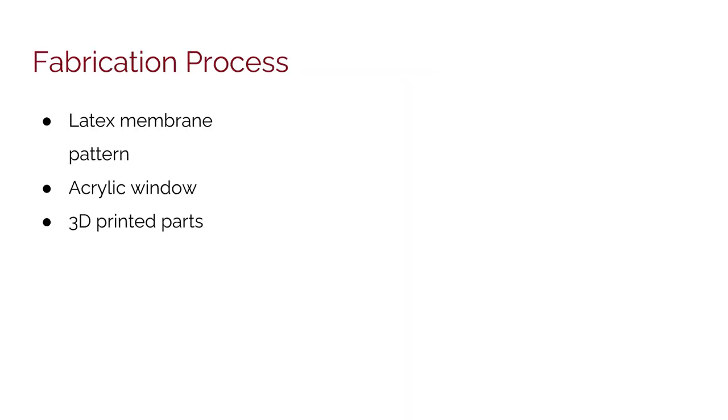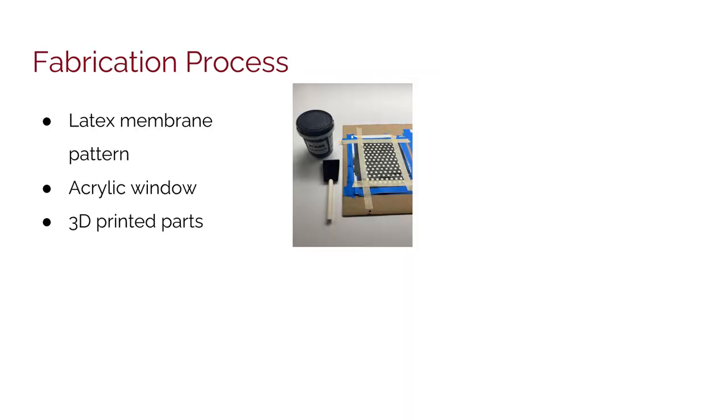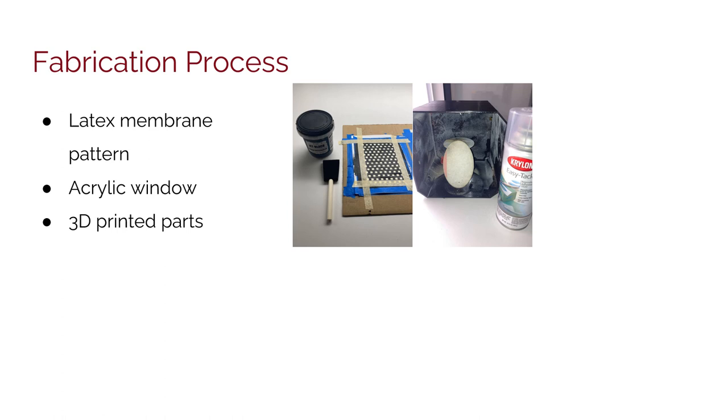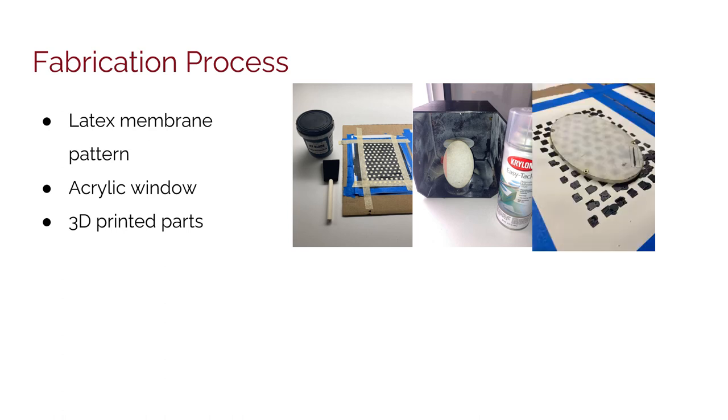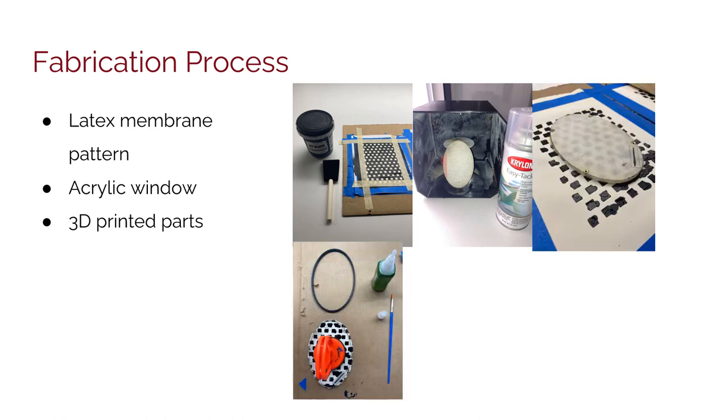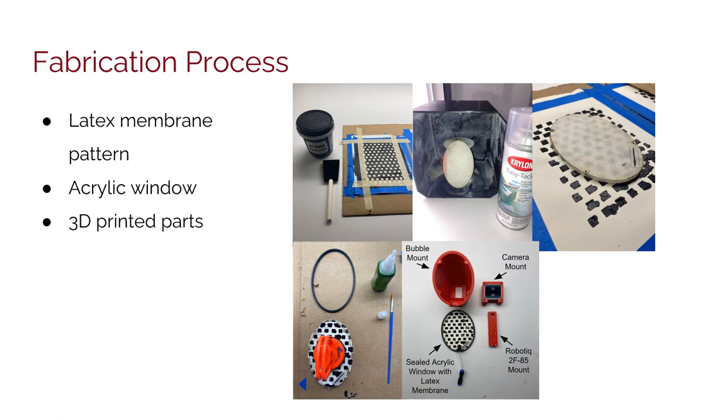Here we show the fabrication process for the Soft Bubble Grippers. We start by painting a stenciled pattern onto the latex membrane to help with depth estimation. We then spray adhesive onto the acrylic window, which is adhered to the latex membrane. We cut the excess latex and glue it into a 3D printed sealing band, which we can pressurize using the attached nozzle, and we can attach it to the other 3D printed components such as the bubble mount, camera mount, and Robotiq mount. This is the assembled picture of the Soft Bubble Grippers.